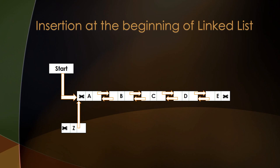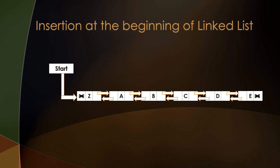Since node A initially had its backward pointer set to null, we now need to change that null pointer to point to node Z. So we've changed the backward pointer of node A to point to node Z. The last step is to change the start pointer to point to the new node Z, since node Z will now be the beginning of the linked list. Finally, node Z has been inserted as the first node in the linked list.